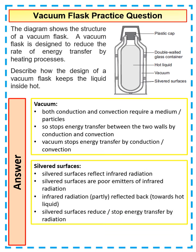And finally, the silver surfaces, they reflect infrared radiation. They're poor emitters of infrared radiation as well, so the infrared radiation, so the heat energy is reflected back in. So there are just a few of the key things that you need to think about when answering questions on vacuum flasks.